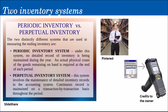The two types of inventory systems are the periodic inventory system and the perpetual inventory system. The periodic inventory system is what we have been using in recording journal entries discussed in previous lessons. Now I will be introducing another inventory system, which is the perpetual inventory system.